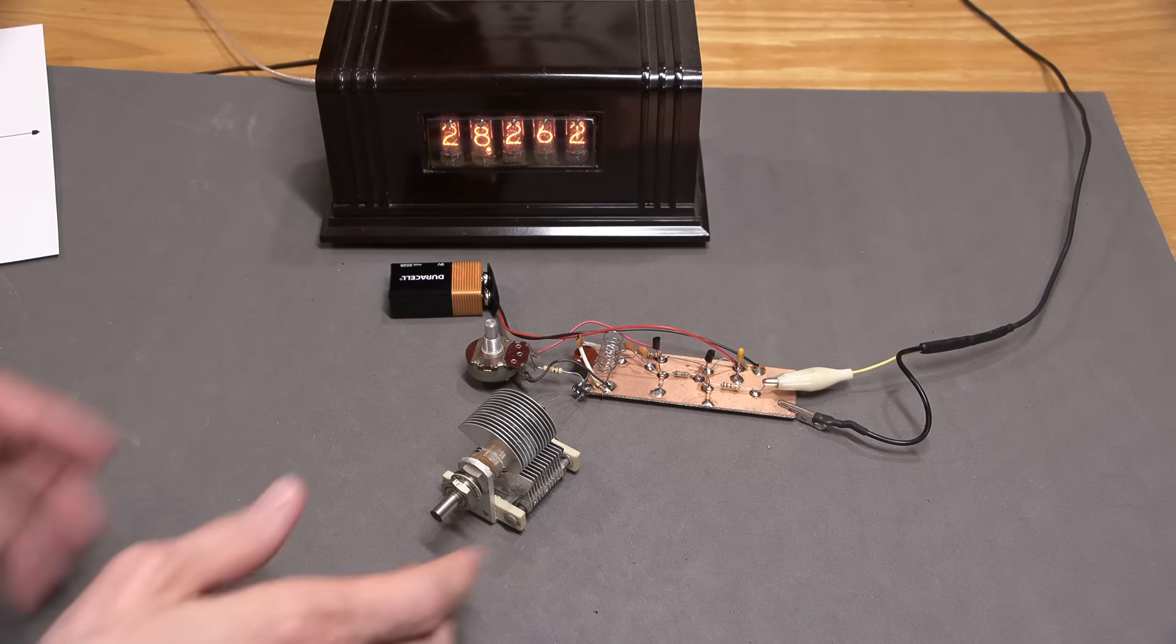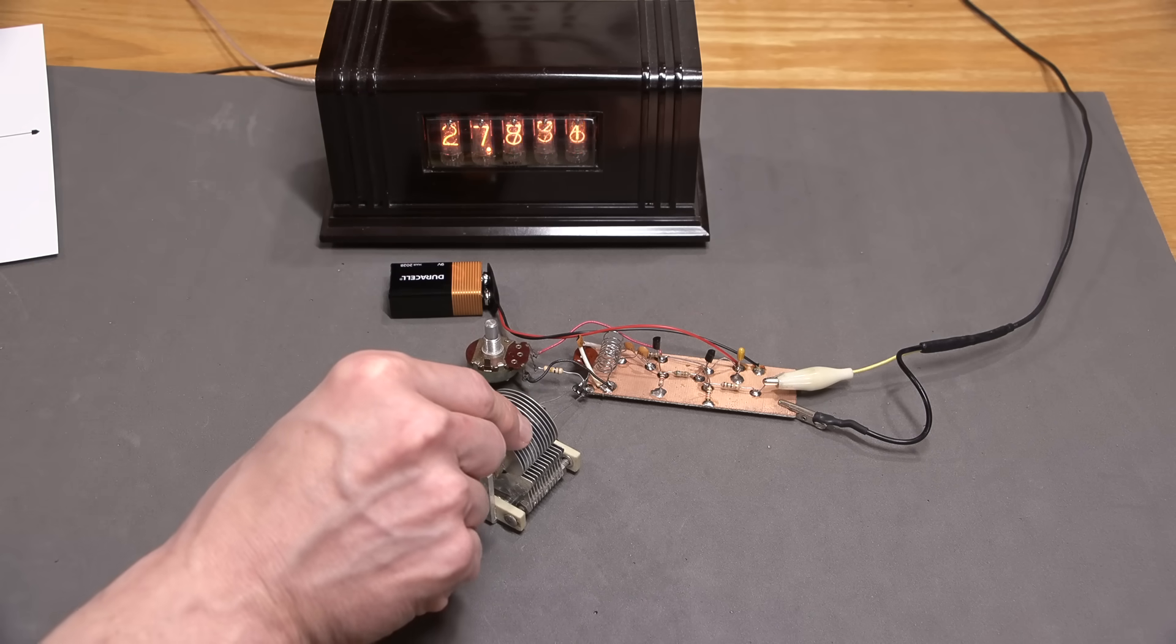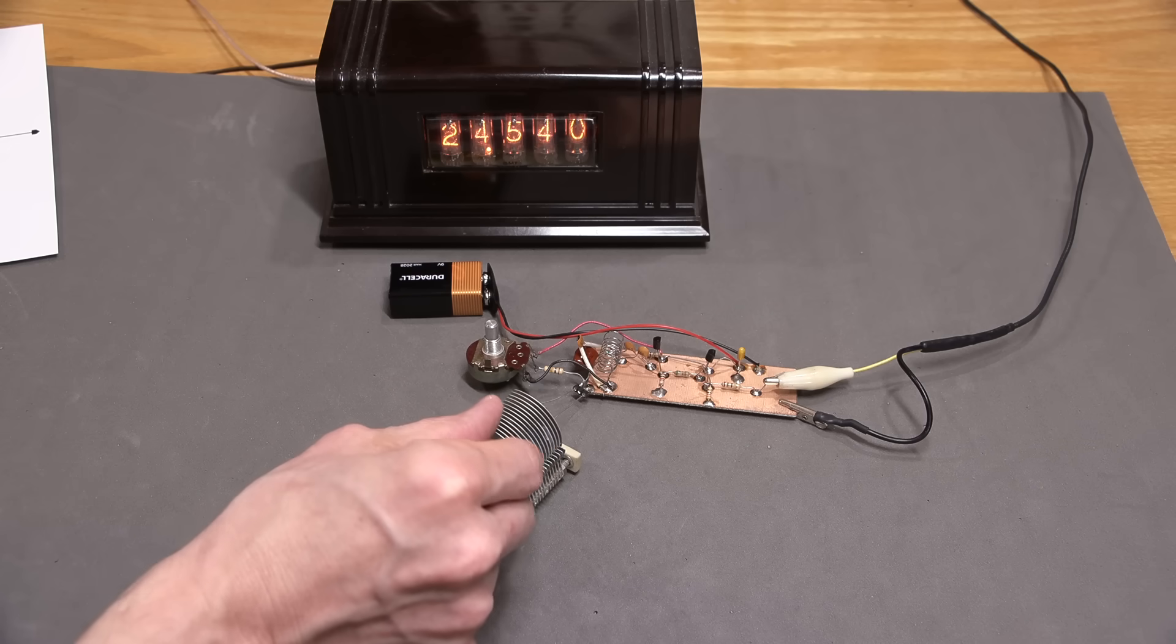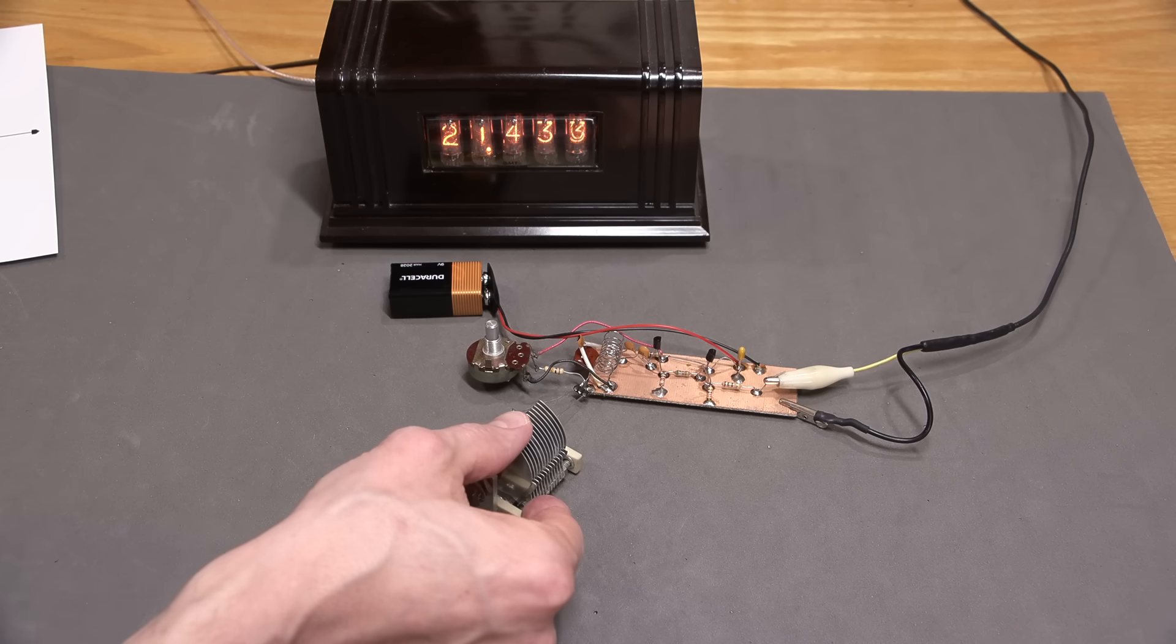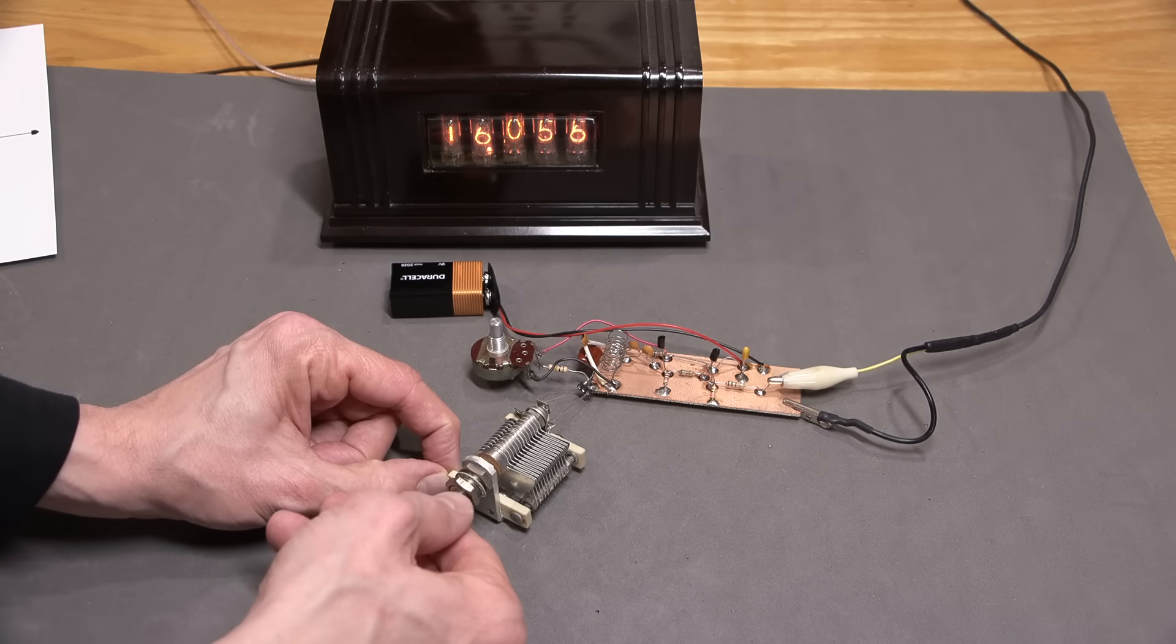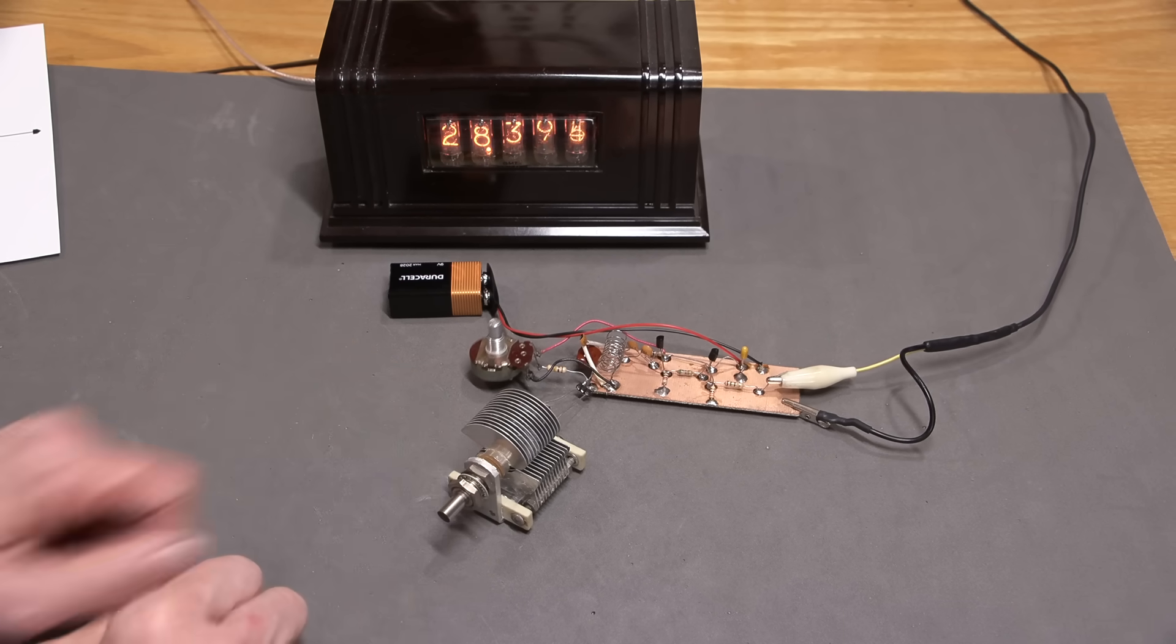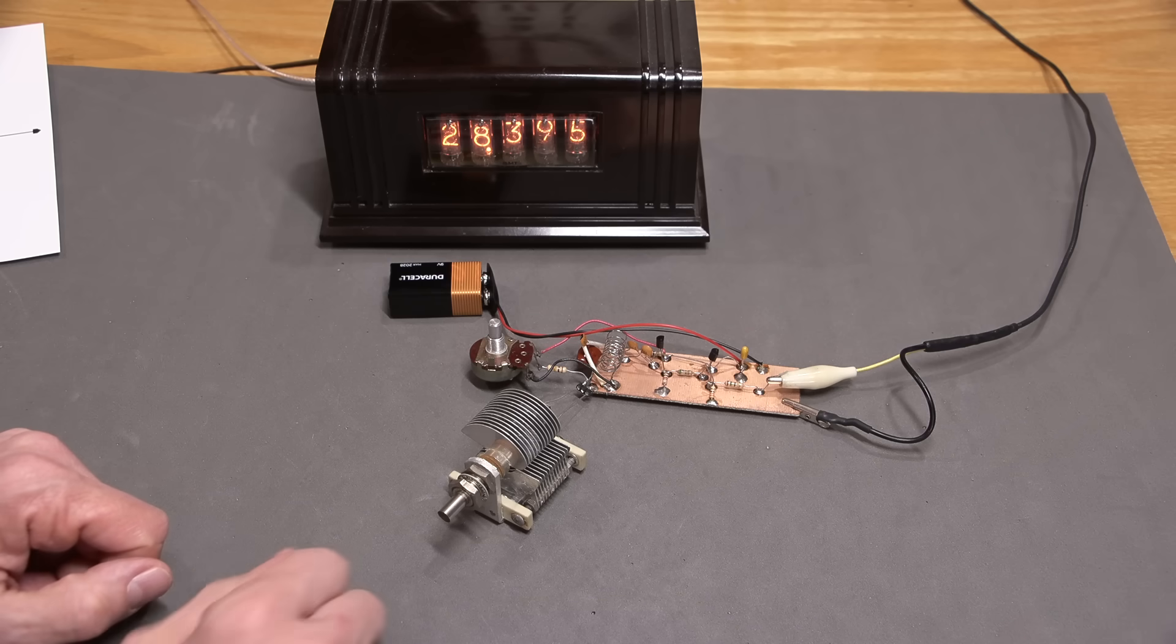So now we know the variable capacitor moves everything. If I hold this, this is the part that's actually grounded here. So you can see that moving it, the plates in, so closing the plates, weighing down the circuit basically is adding capacitance. And then of course lightening up the circuit, opening the plates causes the frequency to rise.